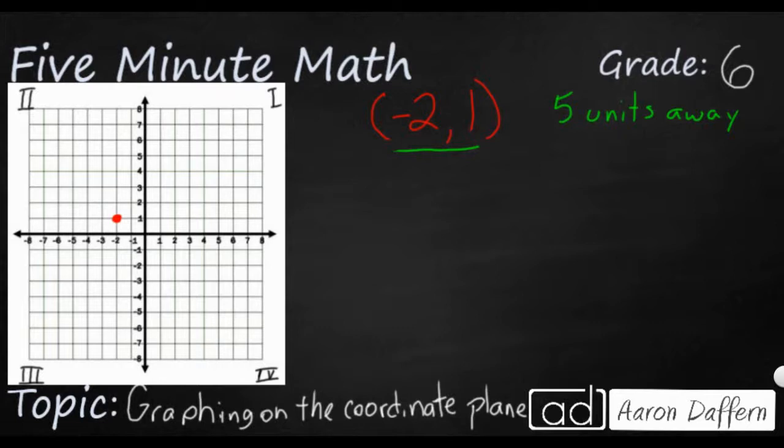So if I wanted to go to the left of (-2, 1), I'm simply going to change my x-coordinate from -2 to -7 because that is five units to the left. I am not changing my y-coordinate at this point. So that is one of the possibilities.